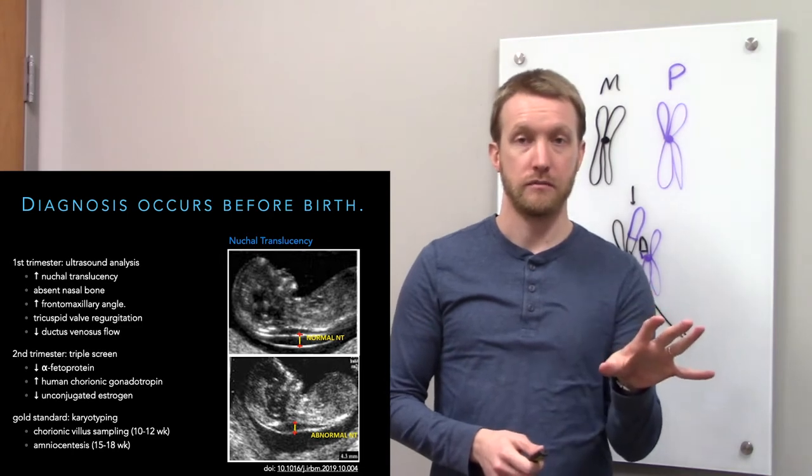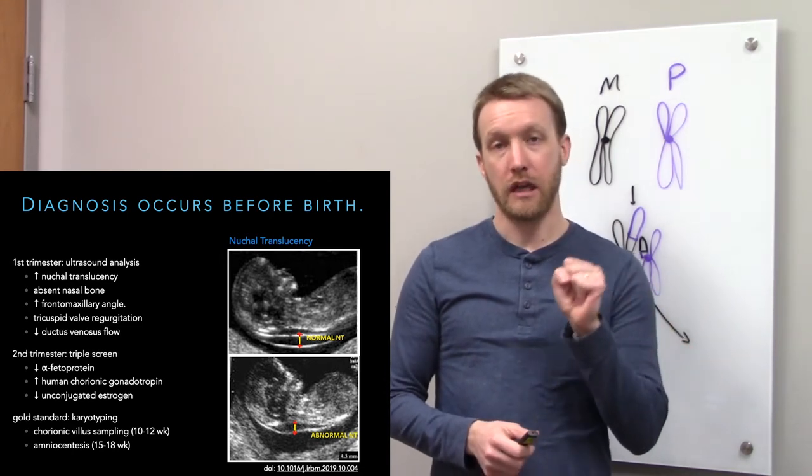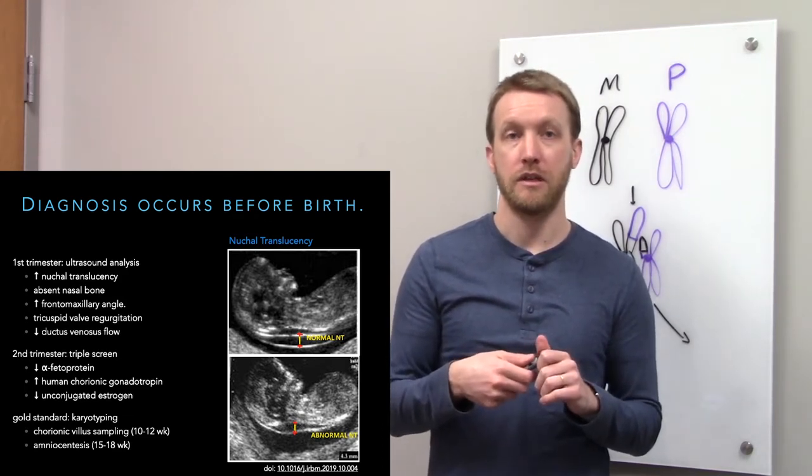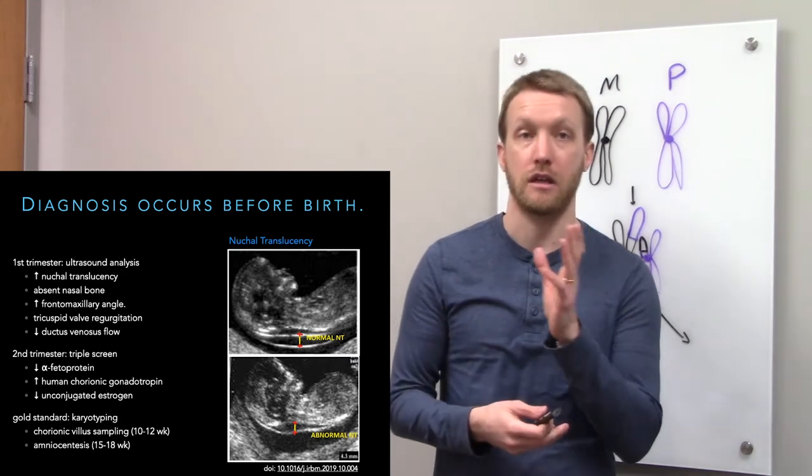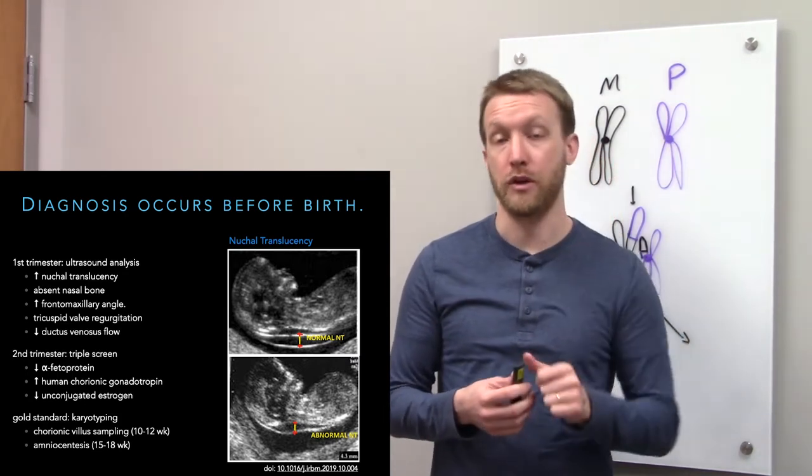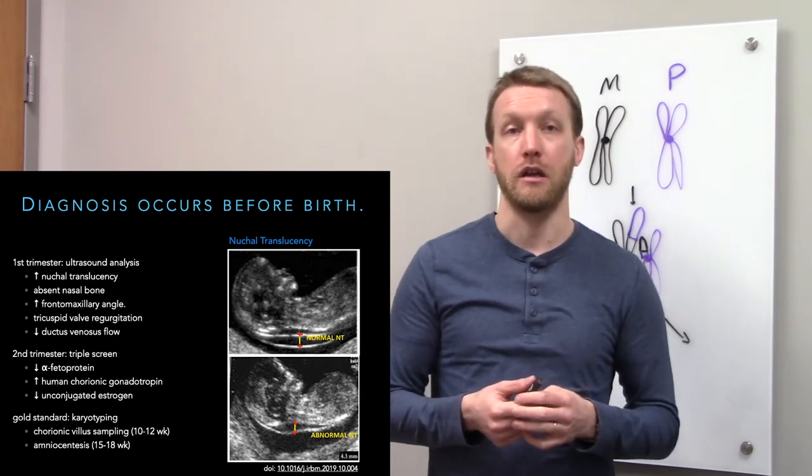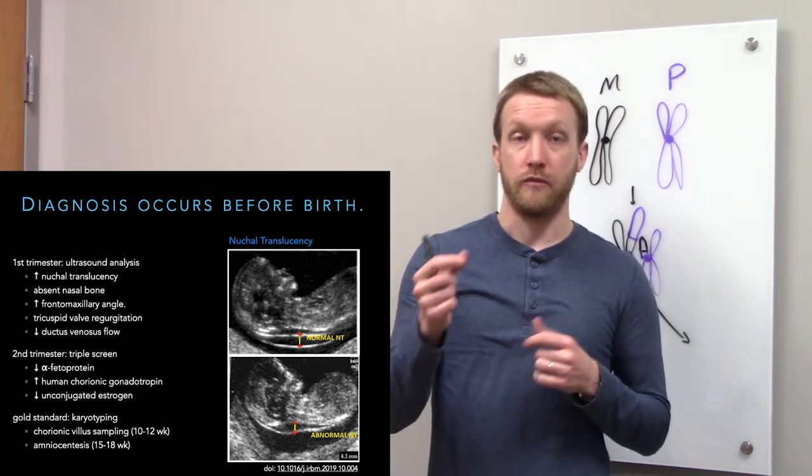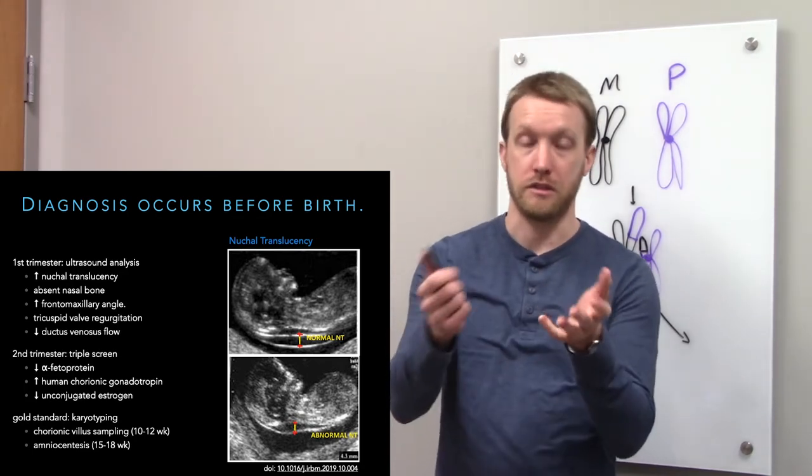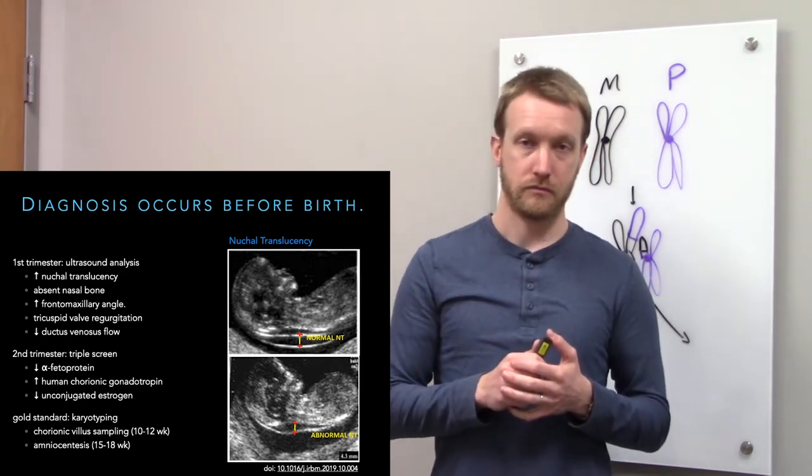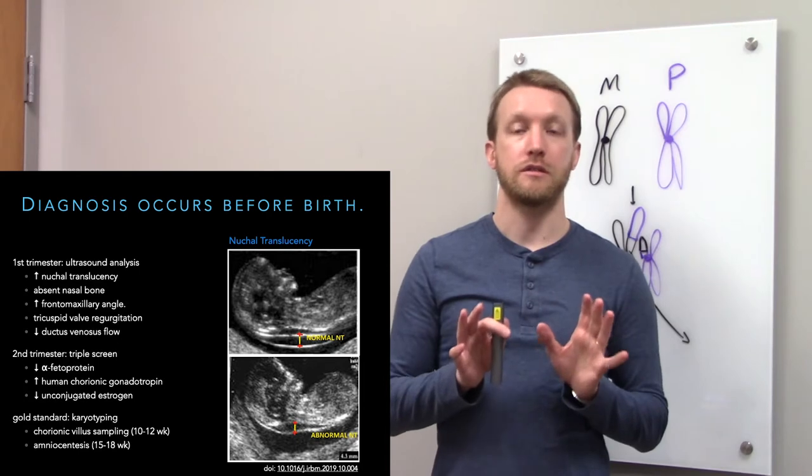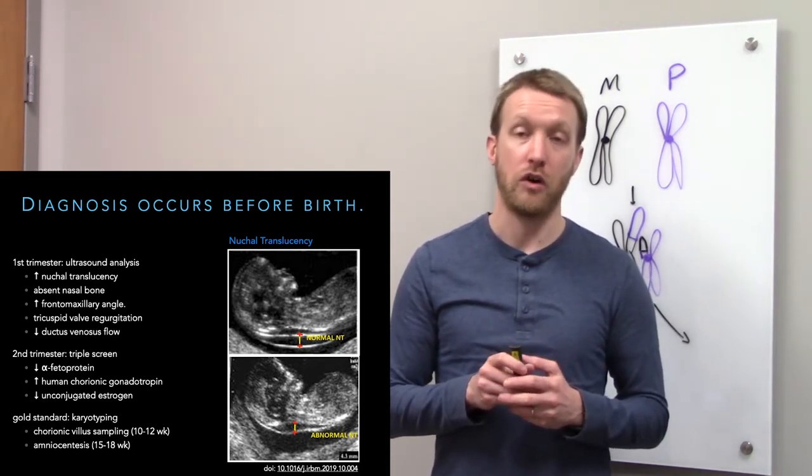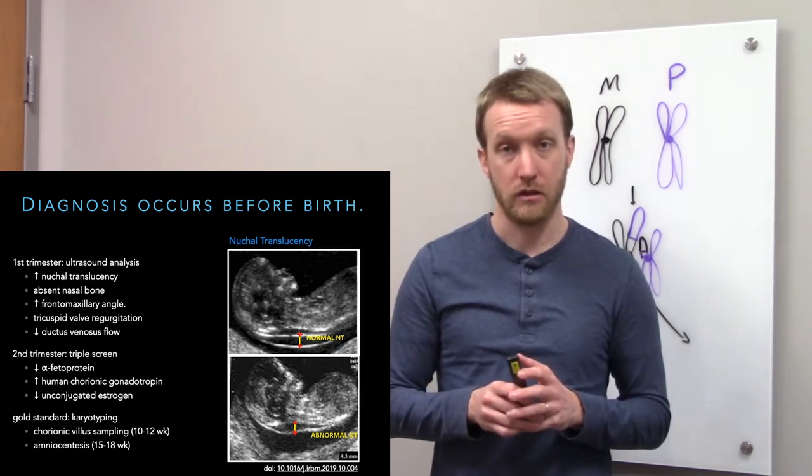During the second trimester, we can screen for Down syndrome by sampling a bit of mom's serum and looking for changes in things like alpha fetal protein, human chorionic gonadotropin, and unconjugated estrogen. We'll see a drop in the alpha fetal protein and increase in the human chorionic gonadotropin. There are very low false positive and false negative rates.